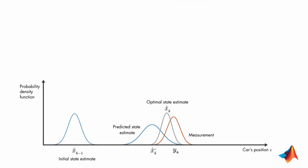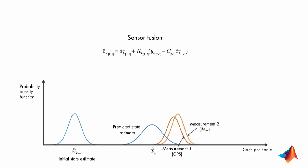If you have two measurements, the dimensions of Y, C, and K matrices will change as shown here. But basically, you will still follow the same logic to compute the optimal state estimate. On the plot, we'll have one more probability density function for the measurement from IMU. And this time, we'll be multiplying three probability density functions together to find the optimal estimate of the car's position.